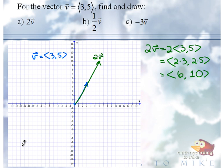What about 1 half vector V? What is that going to turn out to be? 3 halves, 5 halves.